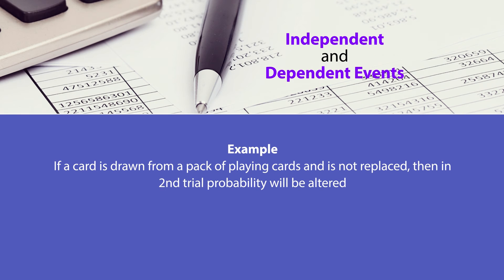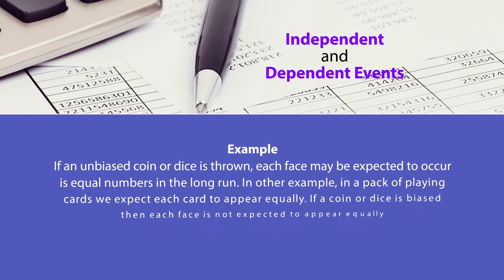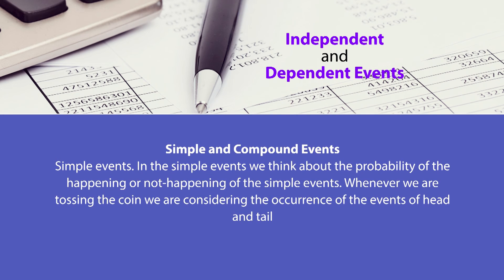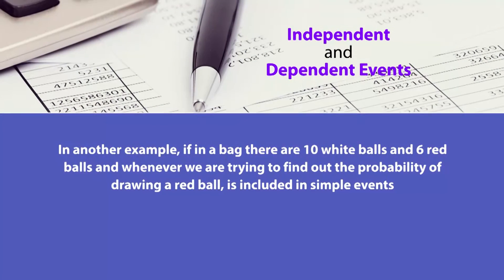Equally likely events are said to be equally likely when there is an equal chance of occurring — when one event does not occur more often than the others. For example, if an unbiased coin or dice is thrown, each face may be expected to occur in equal numbers in the long run; in a pack of playing cards, we expect each card to appear equally. If a coin or dice is biased, then each face is not expected to appear equally. For simple events, we think about the probability of the happening or not happening of single events — for instance, when tossing a coin we consider the occurrence of head or tail, or finding the probability of drawing a red ball from a bag of 10 white and 6 red balls.